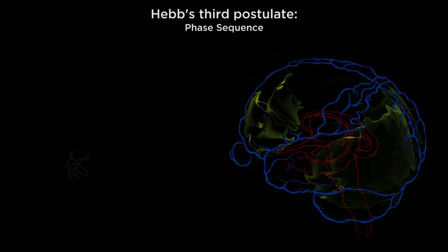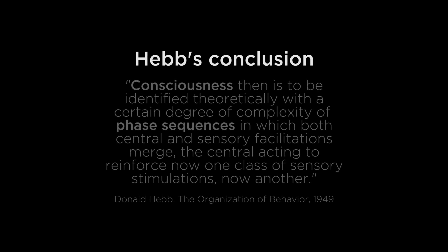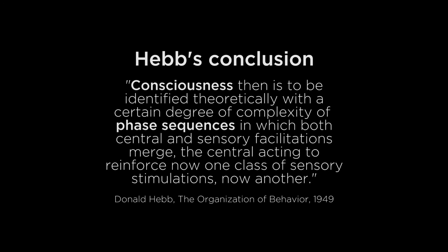In closing, Hebb's conclusion about his three postulates as they relate to consciousness was this: Hebb suggested that consciousness is to be identified theoretically with a certain degree of complexity of phase sequences, in which both central and sensory facilitations merge — the central acting to reinforce now one class of sensory stimulations, now another.